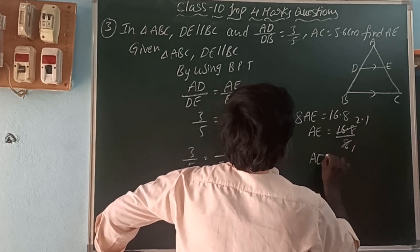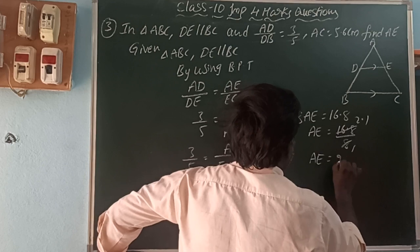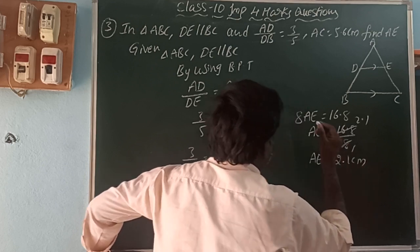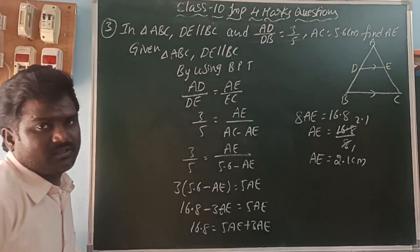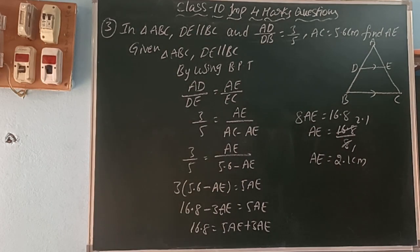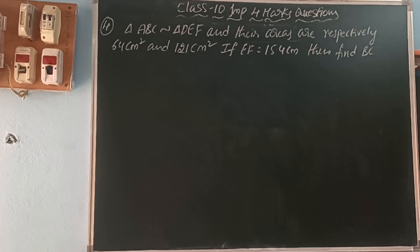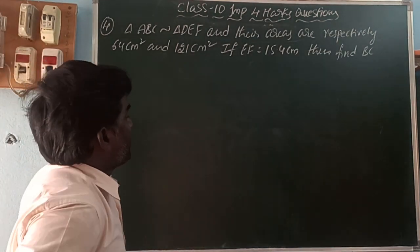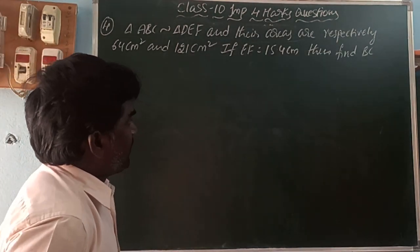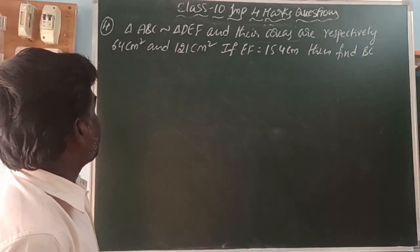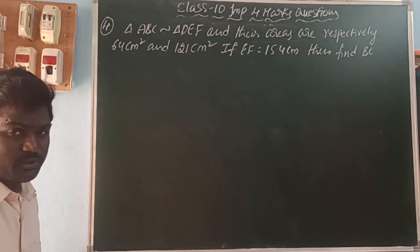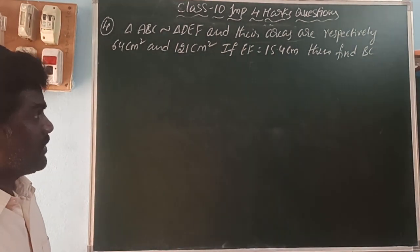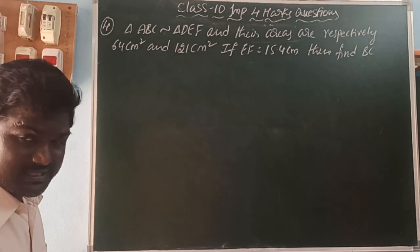AE is equal to 2.1 cm. Next problem: triangle ABC is similar to triangle DEF, and their areas are 64 and 121 cm² respectively. If EF equals 15.4, find BC.